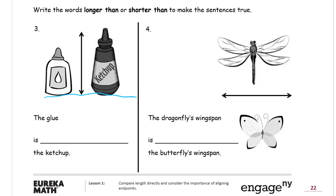The glue is definitely shorter than the ketchup. So we're going to use shorter than the ketchup. We have the words spelled right up here at the top in the directions. So we can look up there to see how to spell them.